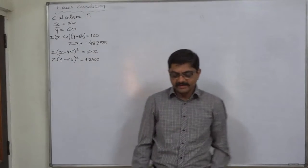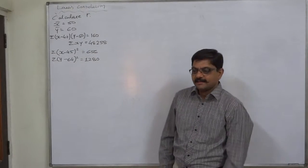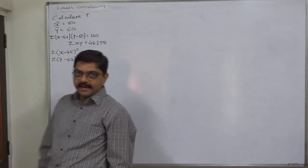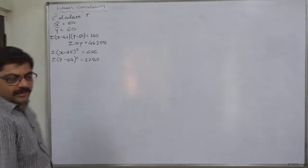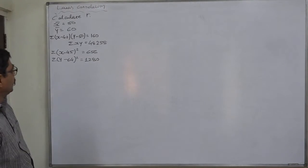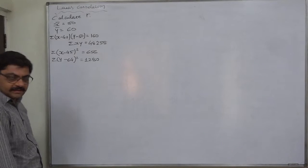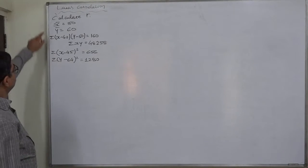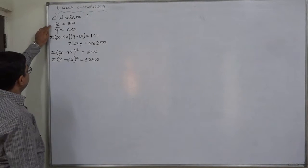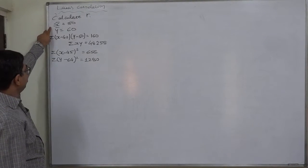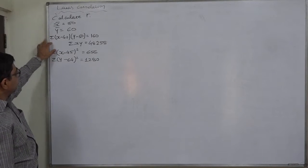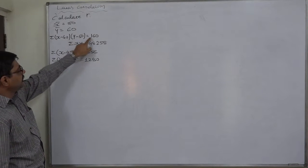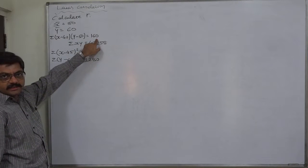Hello and welcome friends. I am here with again a new problem of linear correlation. The data available is: x-bar = 50, y-bar = 60, sigma(x minus 40) = sigma(y minus 50) = 160.